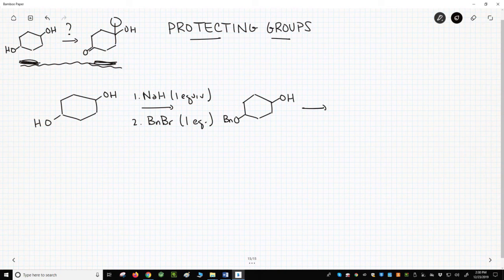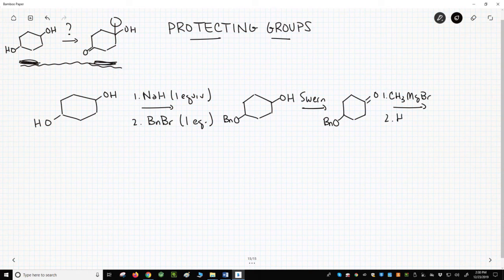So let's oxidize this alcohol through a Swern oxidation. That gives a ketone. We can attack with something like methyl magnesium bromide, followed by addition of water to give an alcohol with our methyl group.